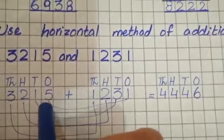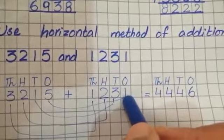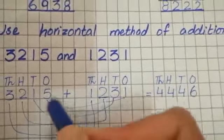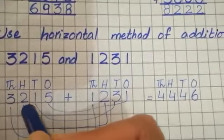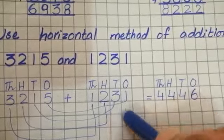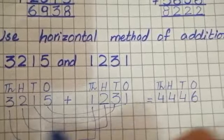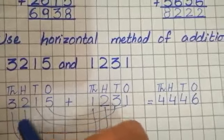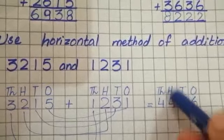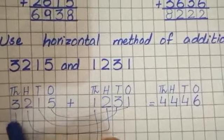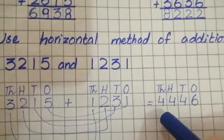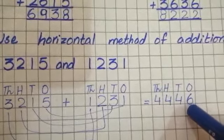1's in the first digit: 5 plus 1 is equal to 6. You have to add 1's with 1's. Then you will add 10's: 1 plus 3 becomes 4 in 10's house. Next is 100's: 2 plus 2 becomes 4 in 100's. Next is 3 plus 1 becomes 4 in 1000's. Answer is 4,446.